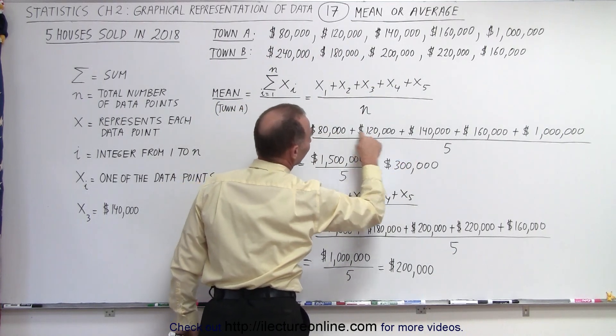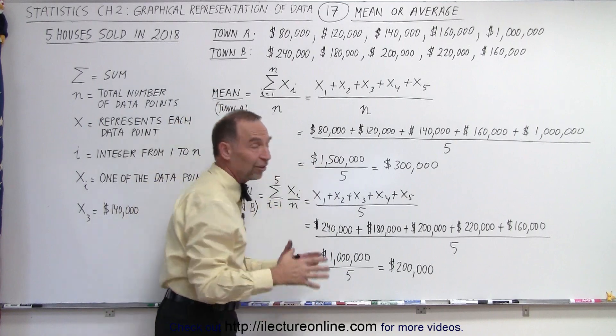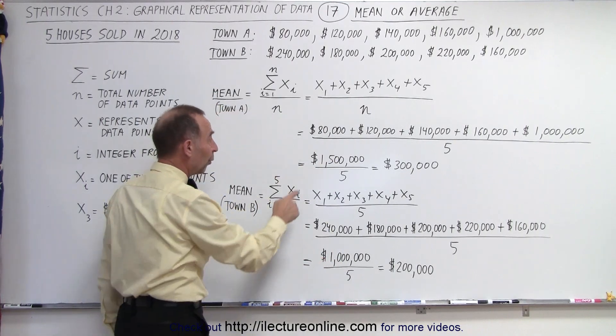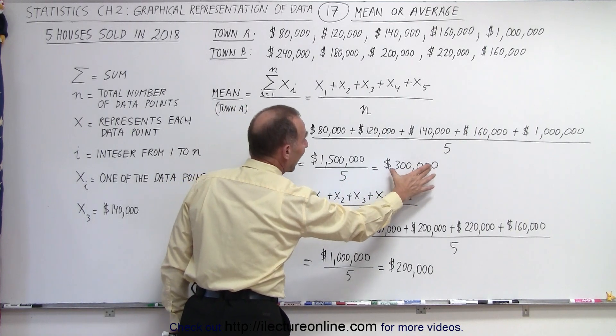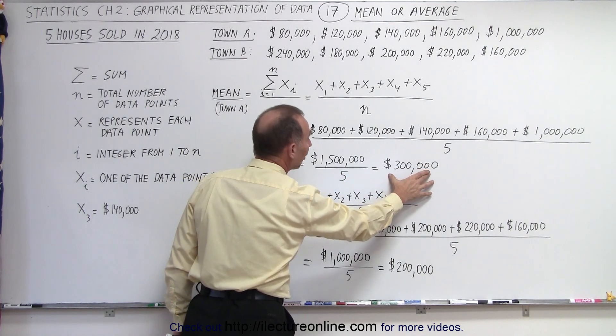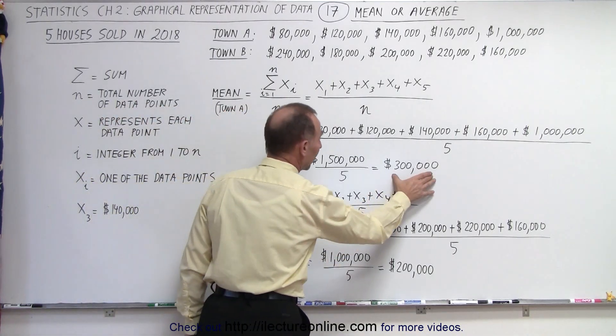When we sum them all up, there's a total sale price of the five houses combined of one and a half million dollars divided by five, which then indicates that the average house price of the houses sold in 2018 in town A is $300,000.